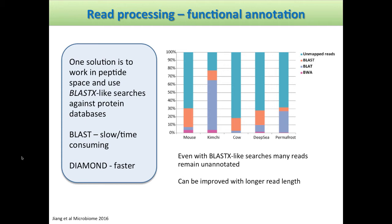Even with these BLASTX-like searches, we still get large proportions of reads that are unannotated. These five different sets of metatranscriptomes show a depressingly large proportion of reads that could not be mapped via either BLAST or BWA. We're hoping that as sequencing platforms deliver longer and longer read lengths, these kinds of issues might start going away. But annotation and identifying matches within our datasets can remain problematic.